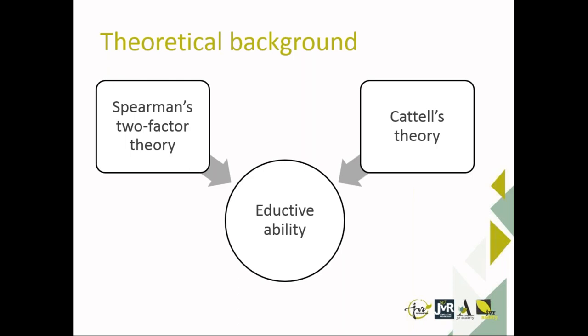According to Spearman's two-factor theory on intelligence, the performance of any intelligent action requires a combination of general intelligence (G) and specific (S) factors. Specific factors include, for example, language and numbers, which are particular to each act and vary from one act to another. All intelligence tests measure a basic general factor — the G factor — which is available to the same individual to the same extent for all intelligent acts.